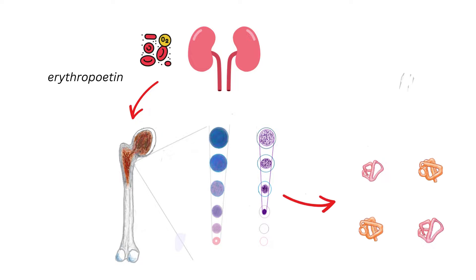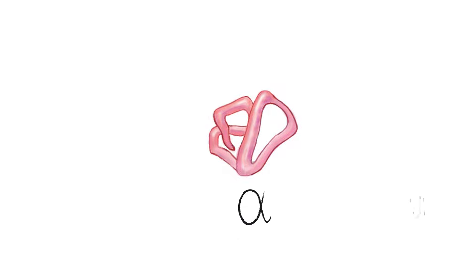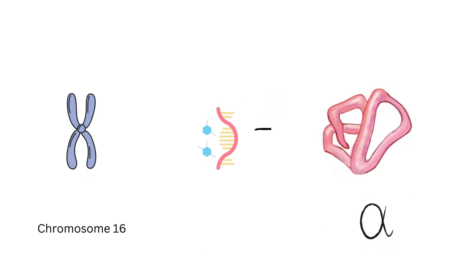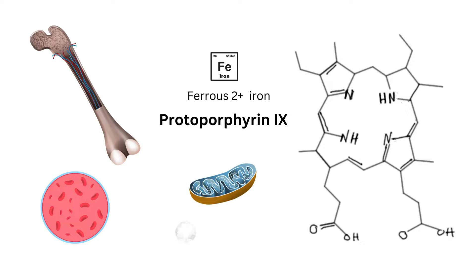Protein globin chains are the products of the erythropoietin precursors. A helical protein globin chain with a hydrophobic cleft pocket for heme is waiting for the heme group. Erythroid ribosomes made this alpha polypeptide chain. Protoporphyrin 9 is made in the mitochondria of the erythropoietin precursors.